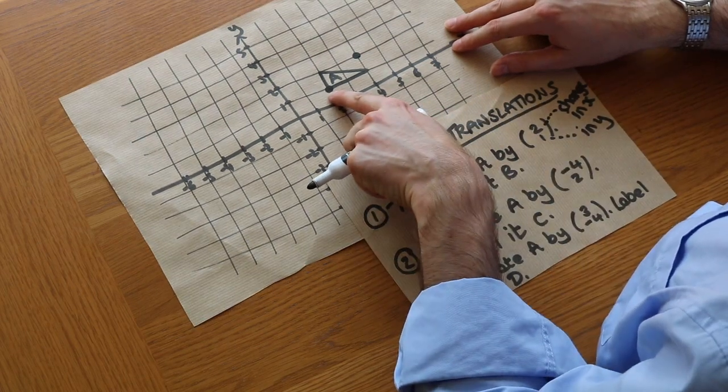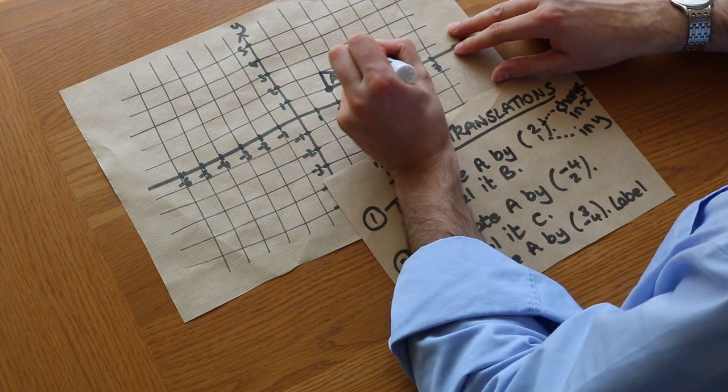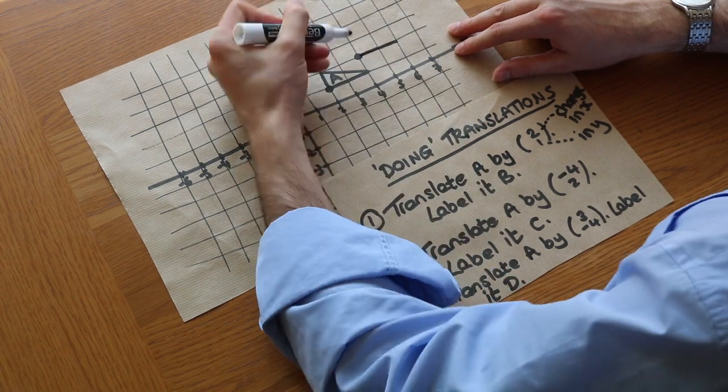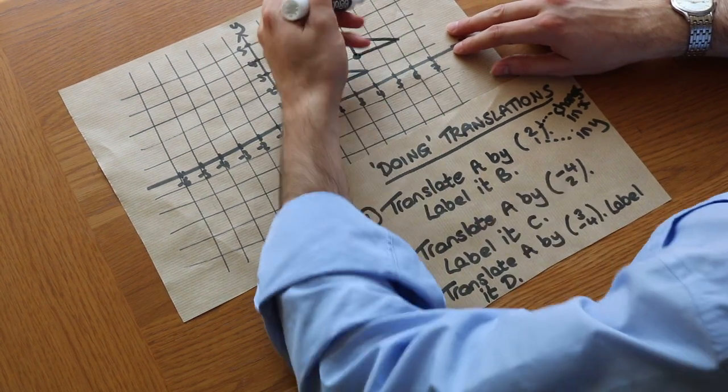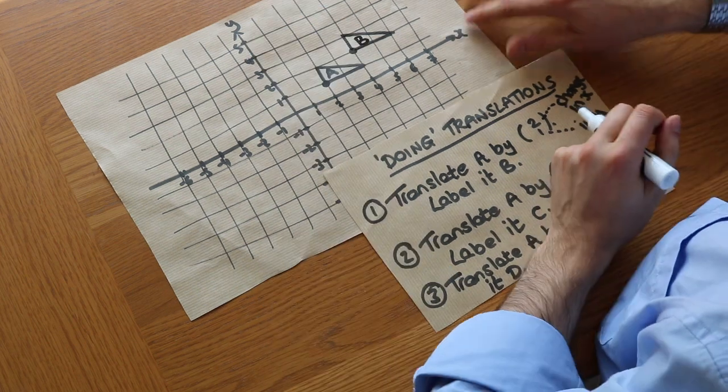And now we can fill in the rest of the shape because we know that point goes to there. We can just copy the rest of the shape from that point like that and let's label it B as per the instructions. And there we go, that's our first translation.